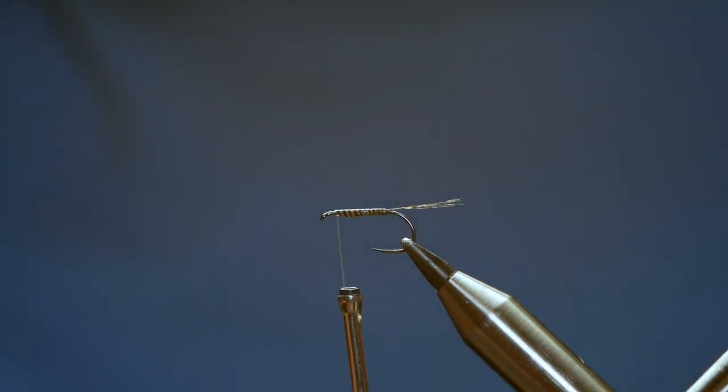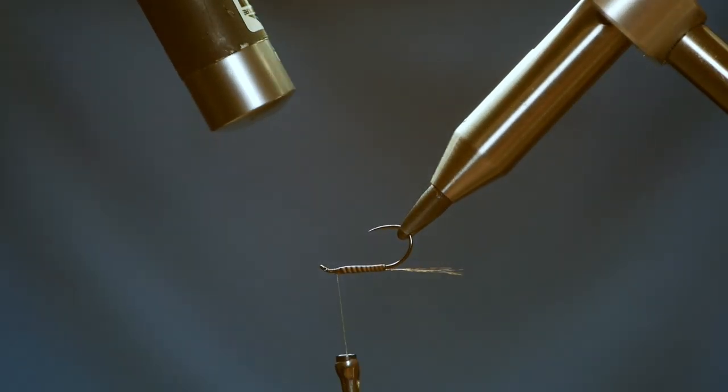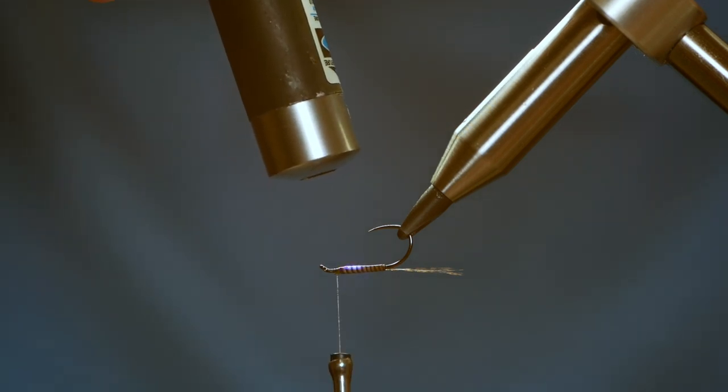Once you're happy that you've secured it all, you can come in with your torch. I'm just going to open my vice up and turn it slightly so that some of that resin runs around the shank. And then I can cure it.